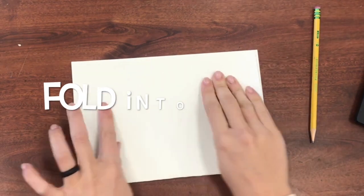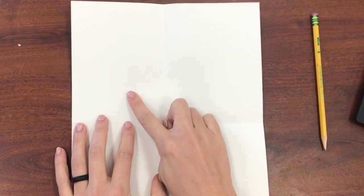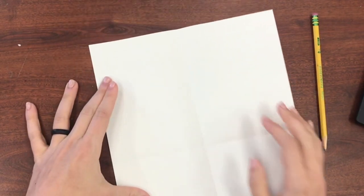You're going to flip it over and fold it into four parts. You can do this by making a hamburger and a hot dog fold and then turning it around. You should have four squares.